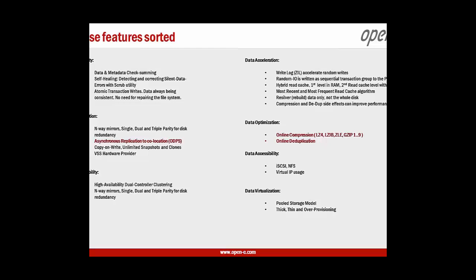That's the current list of features. Marked in dark red, we have asynchronous replication to collocation, which we call Offsite Data Protection Service. This can be a few different modes, and we are going to introduce this feature today. Because we are using deduplication and compression, we will also demonstrate how deduplication and compression in a live virtualization environment works.